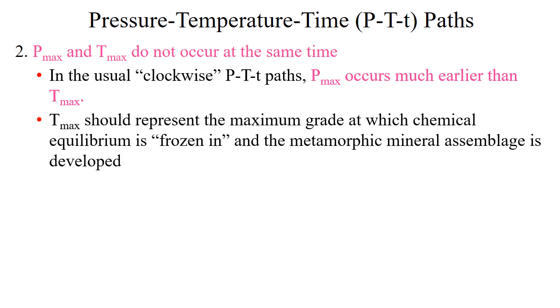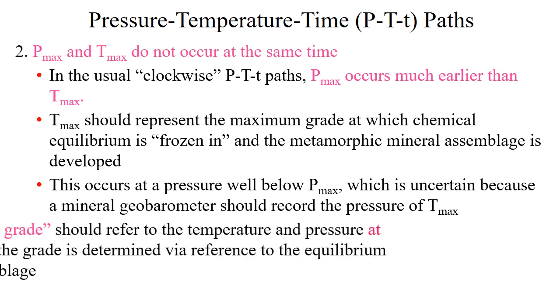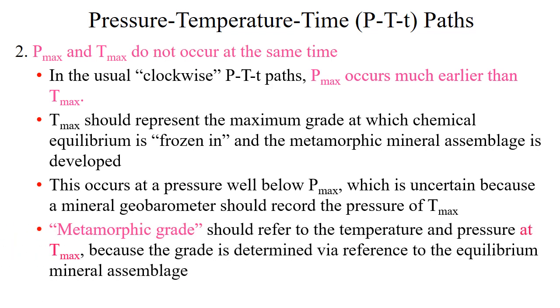T max should represent the maximum grade at which chemical equilibrium is frozen in and the metamorphic mineral assemblage is developed. This occurs at a pressure well below P max, which is uncertain because the mineral geobarometer should record the pressure of T max. Metamorphic grade should refer to the temperature and pressure at T max because the grade is determined via the reference to equilibrium mineral assemblage.